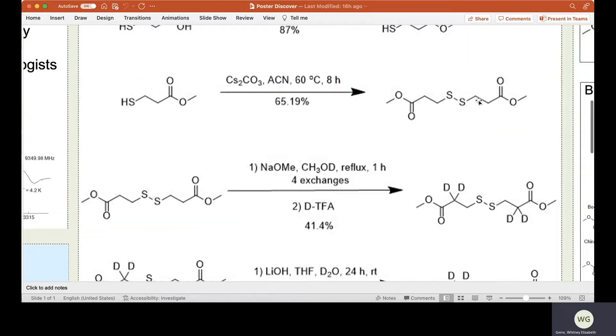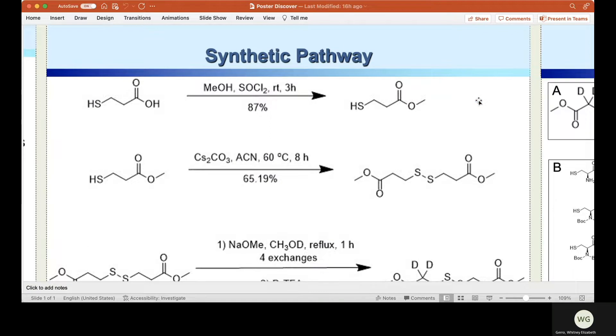We conducted a four-step synthesis. First, via Fisher esterification, we changed our acid to an ester. An ester is a natural side product of deuteration, so to control for this, we decided to begin with the ester.